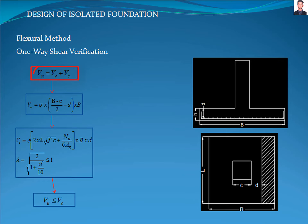Where Vn is the nominal shear strength of the section, Vc is the shear strength of the concrete, and Vs is the shear strength of the reinforcement. The foundation won't be designed with shear reinforcement, which means Vs is equal to 0.